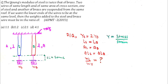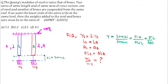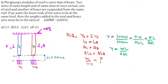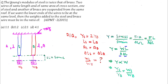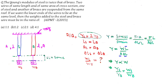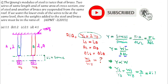Young's modulus equals stress by strain. Stress is force by area and strain is delta l by l, so Y equals W l divided by A into delta l. Since length, area, and delta l are all constant, Young's modulus is directly proportional to weight. Therefore Y_s by Y_b equals W_s by W_b, and since Y_s by Y_b equals 2, the answer is W_s by W_b equals 2.